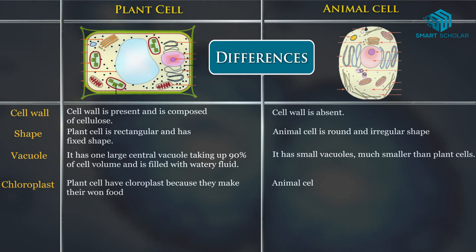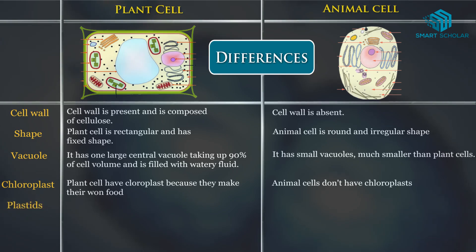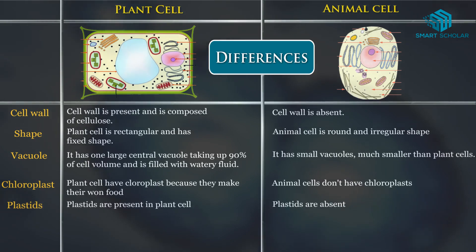Chloroplast: plant cells have chloroplasts because they make their own food, whereas animal cells don't have chloroplasts. Plastids: plastids are present in plant cells, whereas plastids are absent in animal cells.